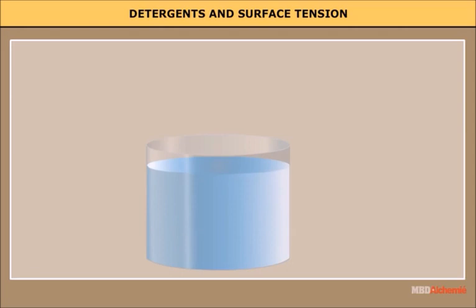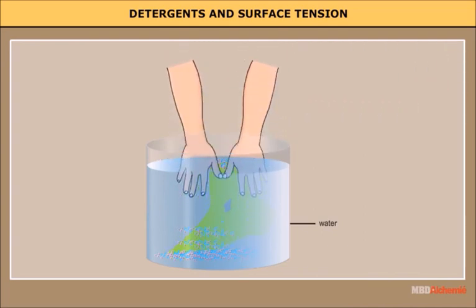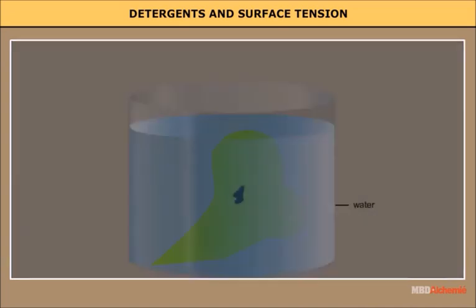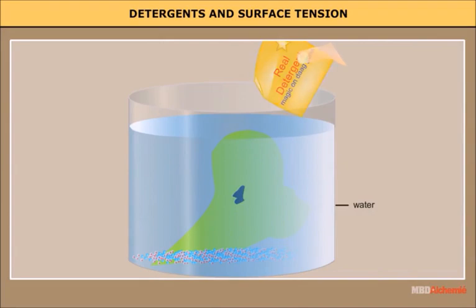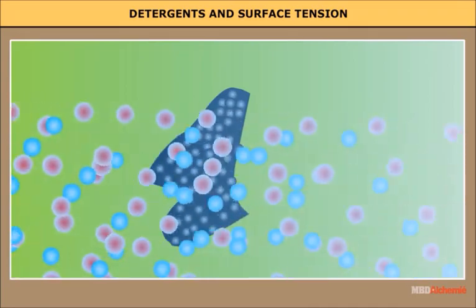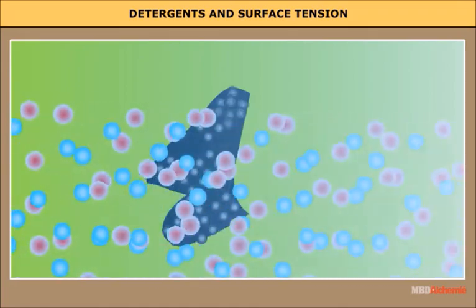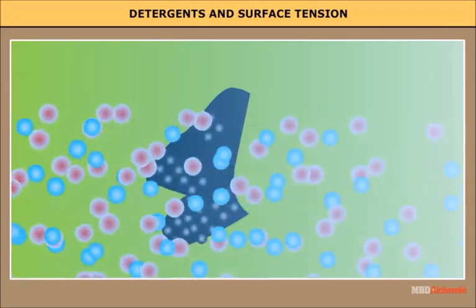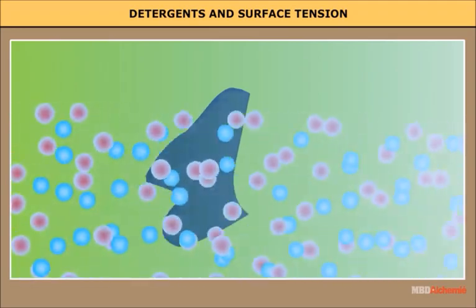Detergents and surface tension: we clean dirty clothes containing grease and oil stains by adding detergents or soap to water, soaking the clothes and shaking. Washing with water alone does not remove grease stains because water does not wet greasy dirt — there is very little area of contact between them. If water could wet grease, its flow could carry grease away. This is achieved through detergents, whose molecules are hairpin-shaped with one end attracted to water and the other to grease, oil, or wax.